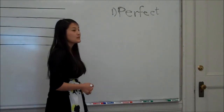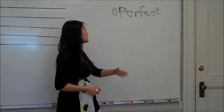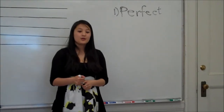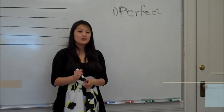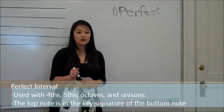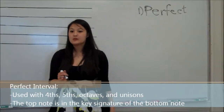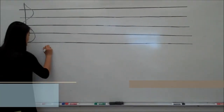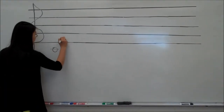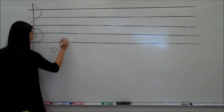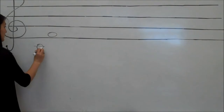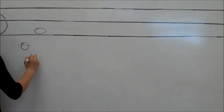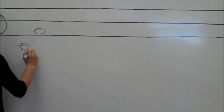Our first type of interval is the perfect interval, and these are used with fourths, fifths, unisons, and octaves. So, for example, if you had a C to an F, you would count up one, two, three, four. So, you have a perfect fourth.